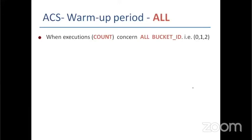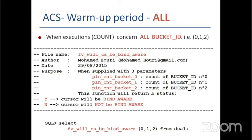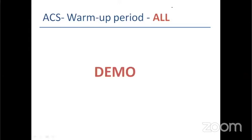Now the last case — when there are executions done at all bucket IDs. In this case, I spent a lot of time trying to reverse-engineer the rule used by Oracle to mark a cursor bind aware. I ended up implementing the following function: you give it three parameters — the count of bucket ID 0, the count of bucket ID 1, and the count of bucket ID 2 — and it will tell you whether the next execution will mark the cursor bind aware: yes or no.